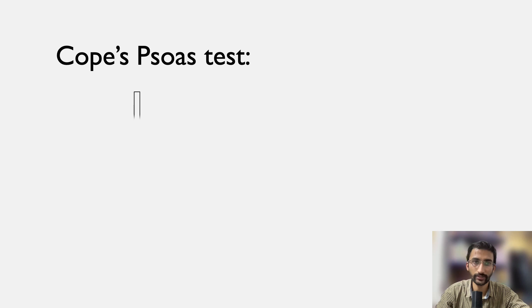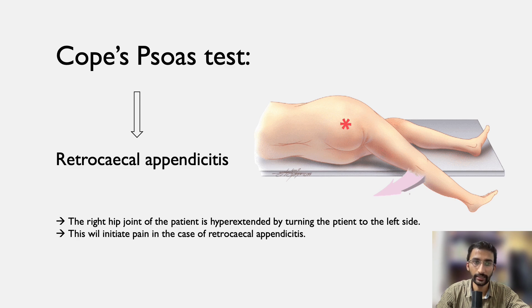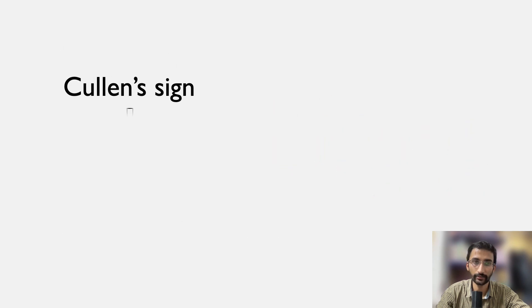Cope's psoas test is done in case of retrocecal appendicitis. The right hip joint of the patient is hyperextended by turning the patient to the left side. This will initiate pain in the case of retrocecal appendicitis.